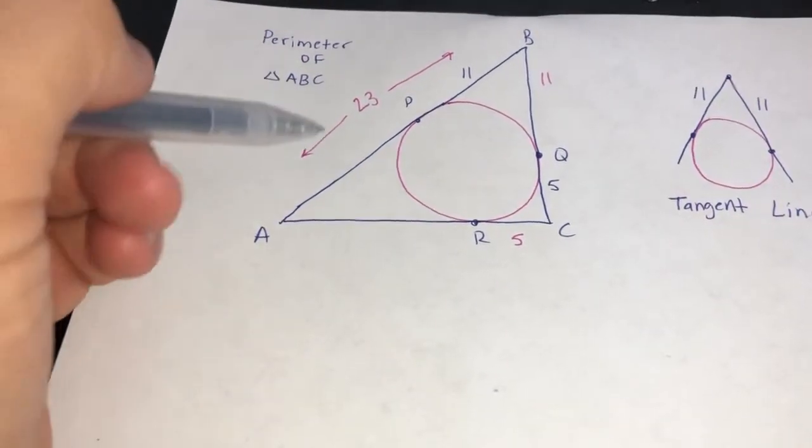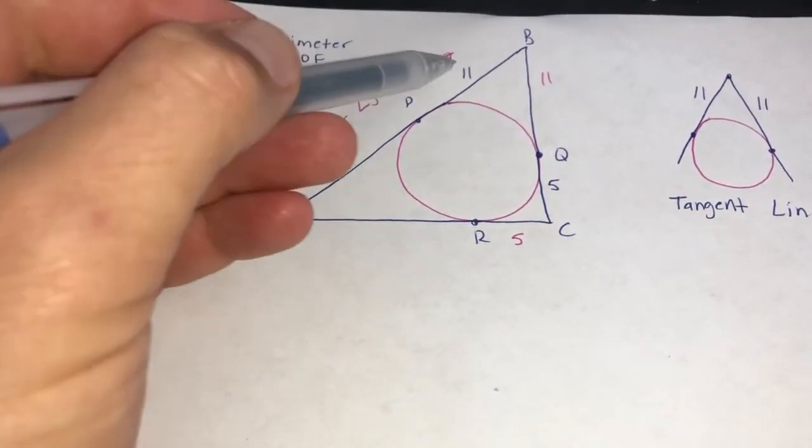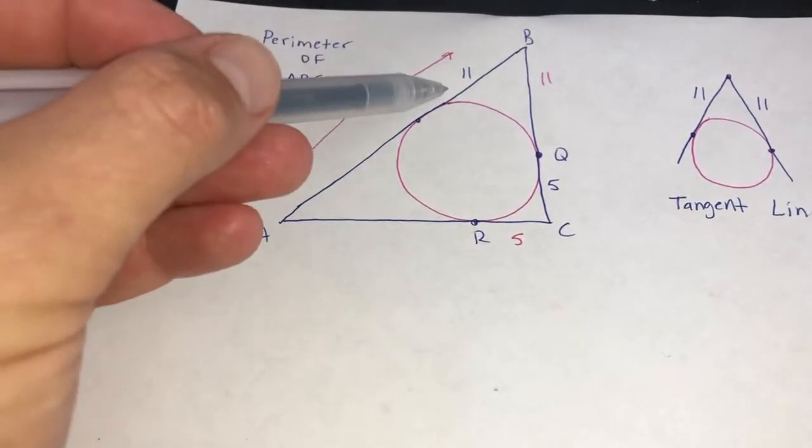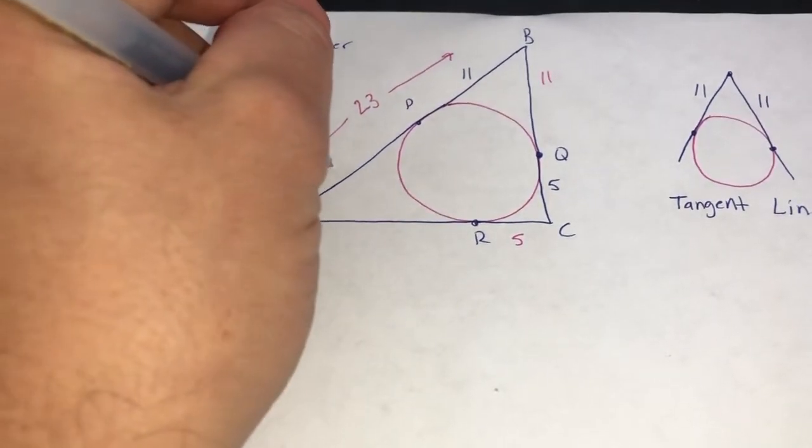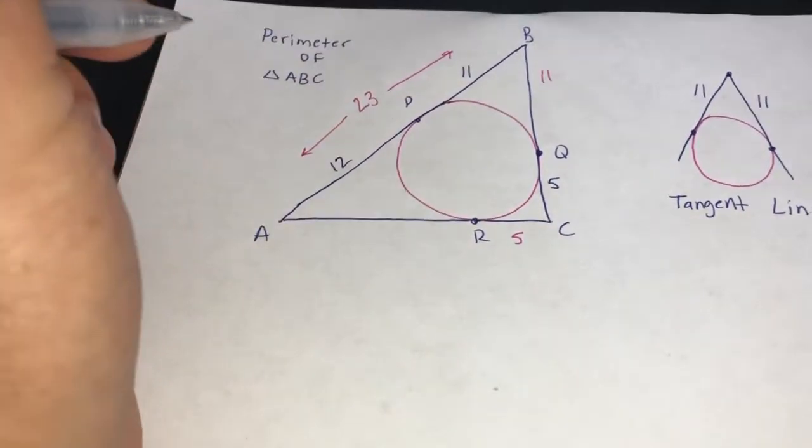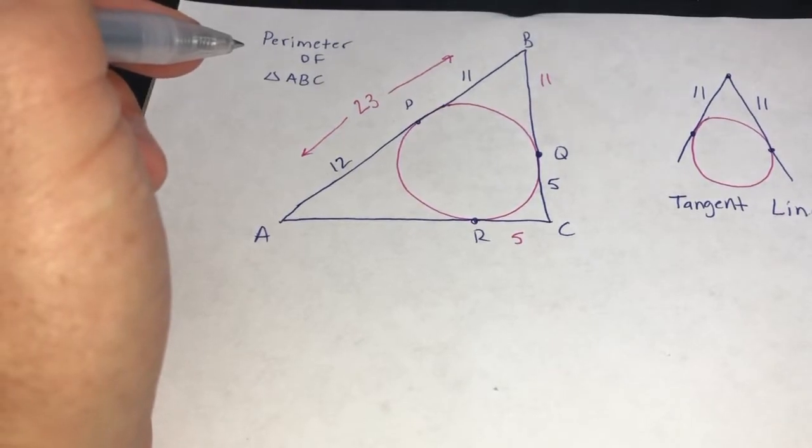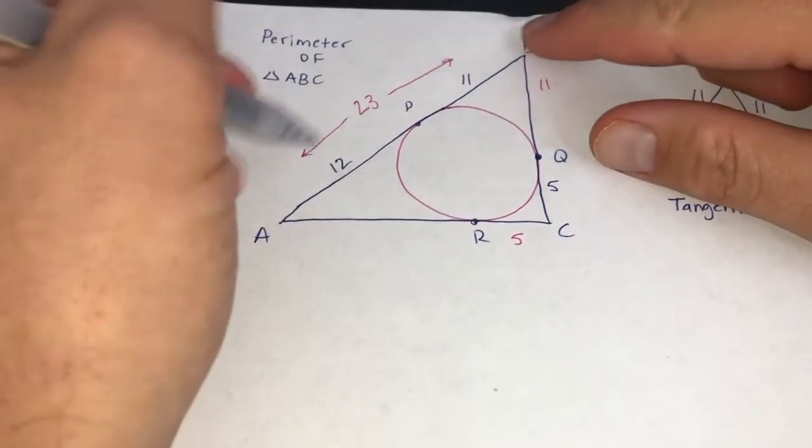Now the tricky part is, what's this? Well, if this whole thing is 23 and this is 11, then this has to be 12. I hope I'm doing the math right. So if the whole thing is 12 plus 11, which makes 23, we knew this is 11.